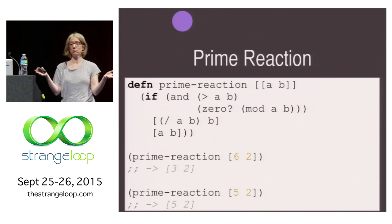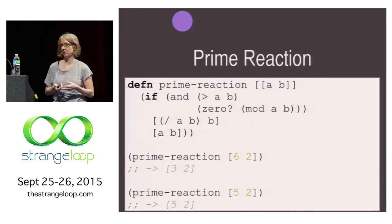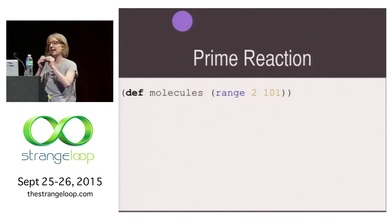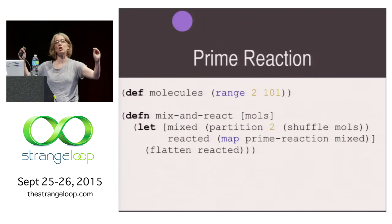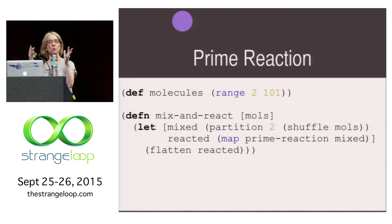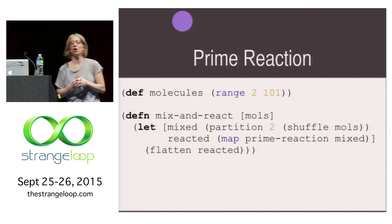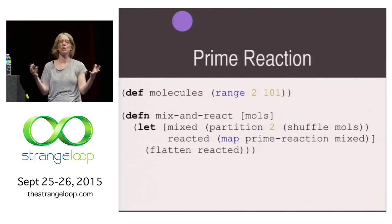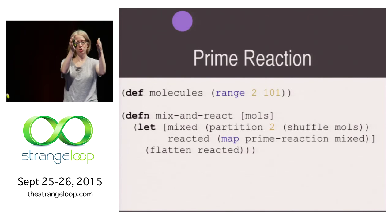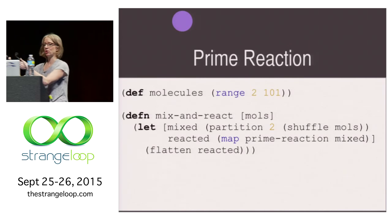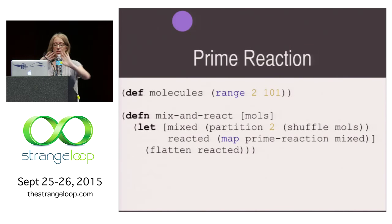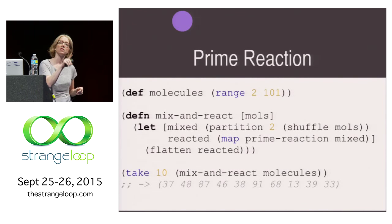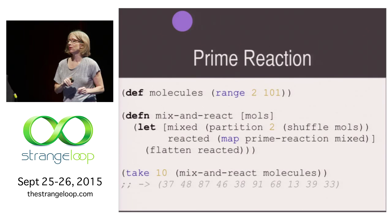We can see the prime reaction of 6 and 2 would return a vector of 3 and 2, and the prime reaction of 5 and 2 would just return unchanged that 5 and 2. Then we can define a whole bunch of these molecules. We could define another function that is going to mix and react these molecules. First we shuffle them all up because we don't care what order they're in. Then we're going to partition them in twos, go down the list and partition them in twos. Then we're just going to go ahead and make them all react in those pairs. Then we're just going to flatten out their return a vector and that's going to be our result.